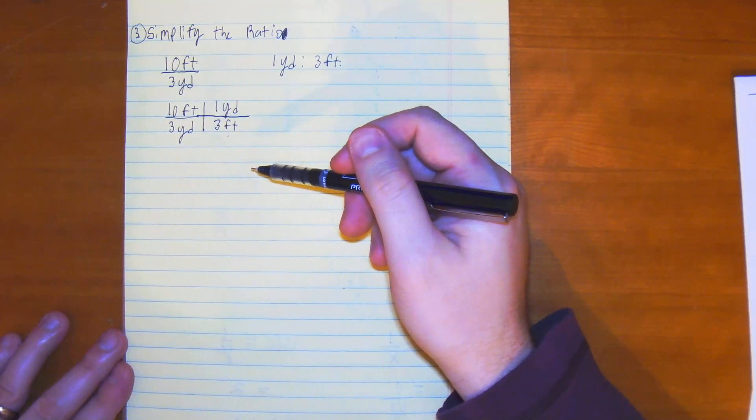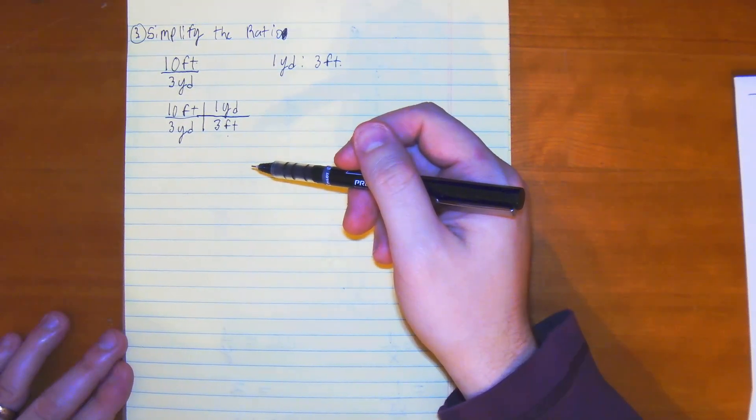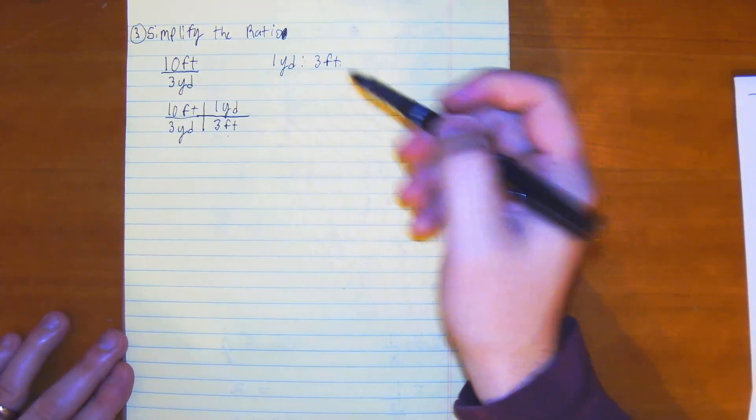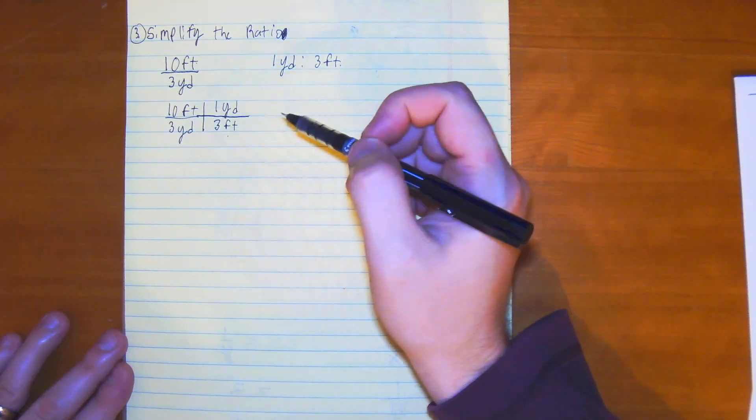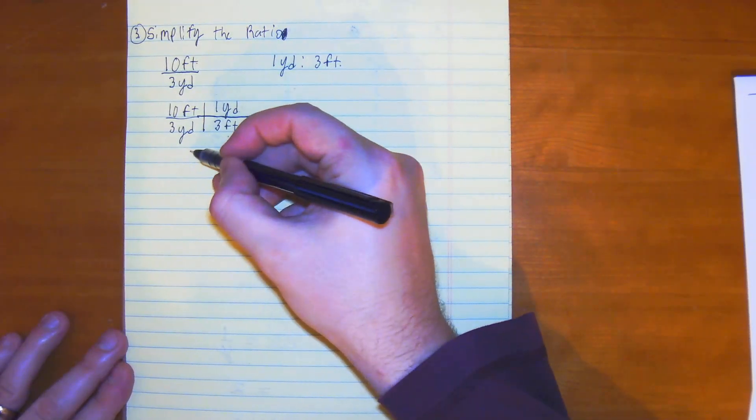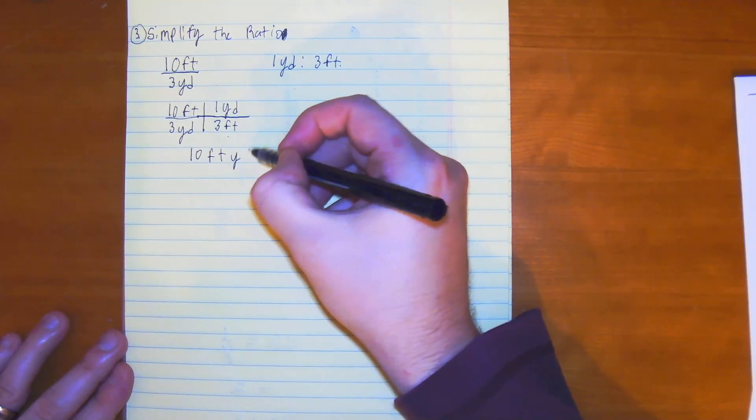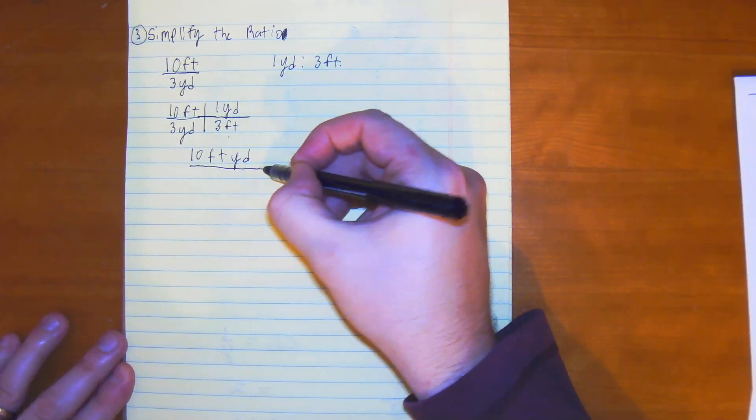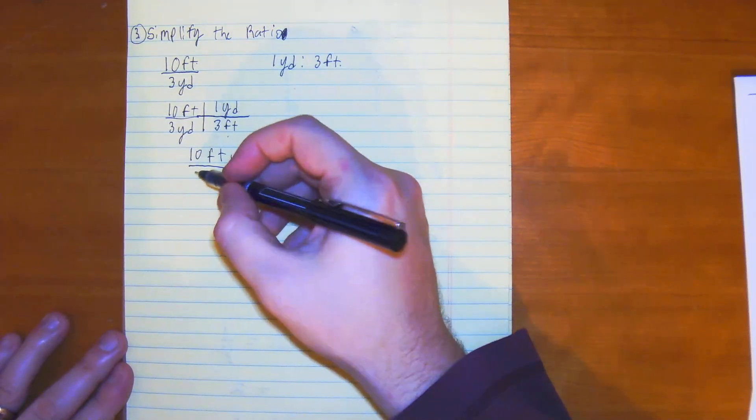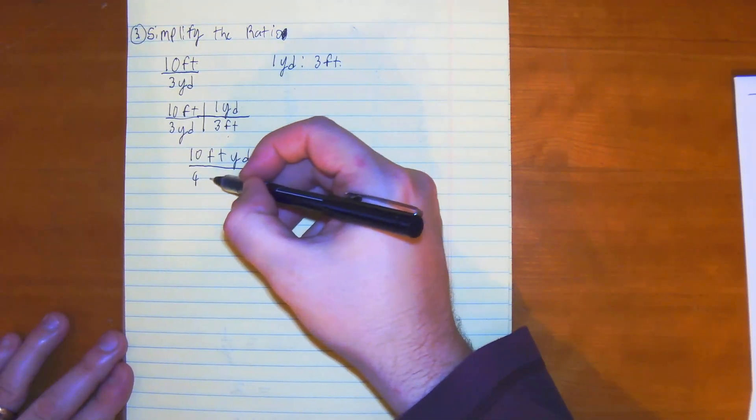And we didn't really change anything here because we're just getting rid of the units itself. For every yard, you have 3 feet. Now, we have yards being divided by yards. So, what we have here is 10 feet yards all over 9 yards feet.